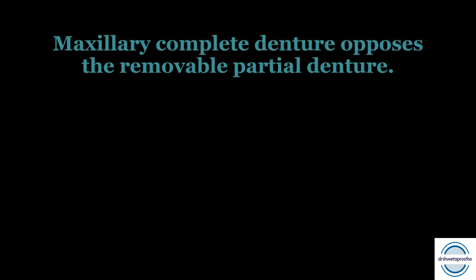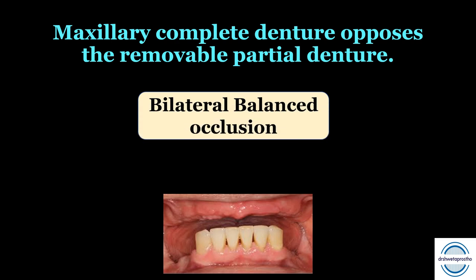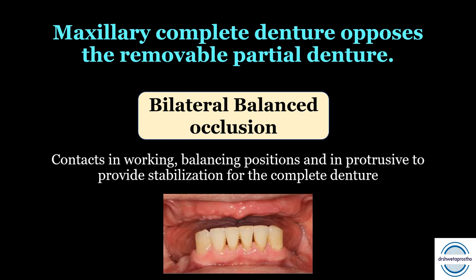The second condition is a maxillary complete denture opposing the removable partial denture — this is a very important condition that comes as a multiple choice question. When there is a maxillary complete denture, we always give bilateral balanced occlusion, just as in a normal complete denture. There will be contacts on the working and balancing sides whenever there is lateral movement of the prosthesis.